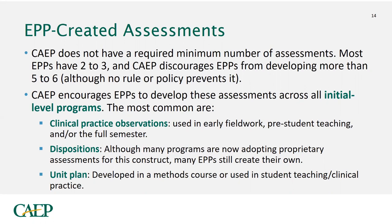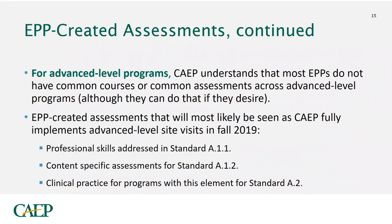People want to know what is the magic number of assessments. There is no minimum and not really a maximum, but having been a site visitor, I would keep that number single digit. A lot of EPPs only have two to three. The most common are a clinical practice observation, sometimes dispositions, possibly a unit plan, or a portfolio. Starting fall of 2019, we're also moving into doing site visits for advanced level programs, so I'd encourage you to check our website to see if your programs fall into scope.